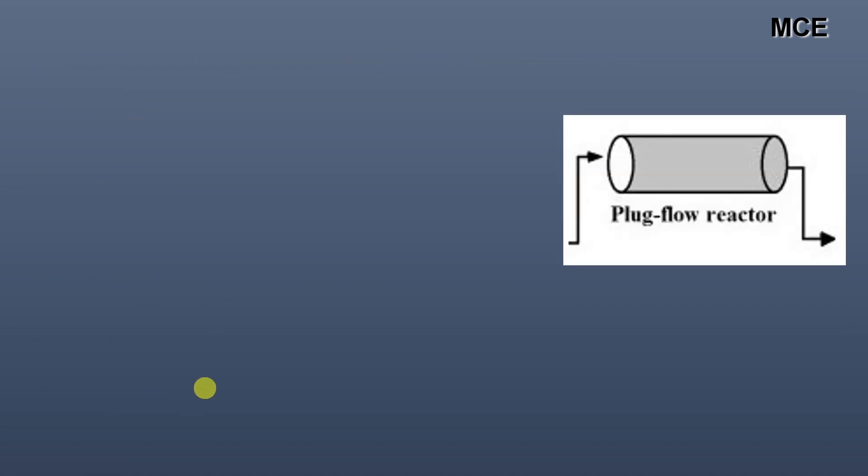Now for the plug flow reactor. Effluent concentration is given as Ce equals C times e raised to the power minus Kt. Putting values, 30 equals 500 times e raised to the power minus 0.6t. Now we will reciprocal both sides. We get e raised to the power 0.6t equals 16.667.